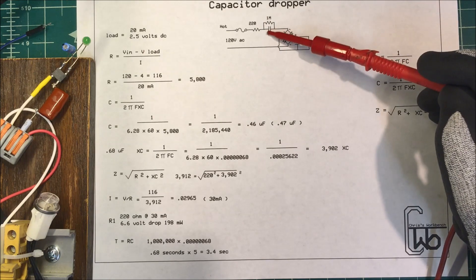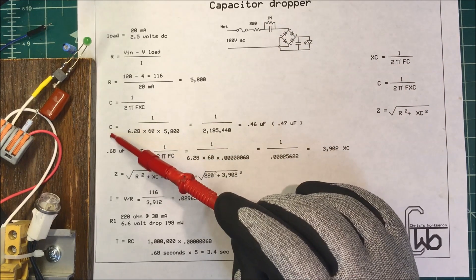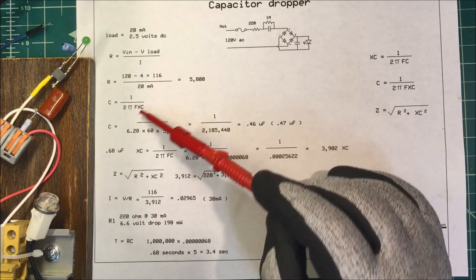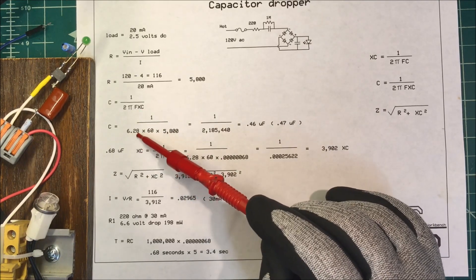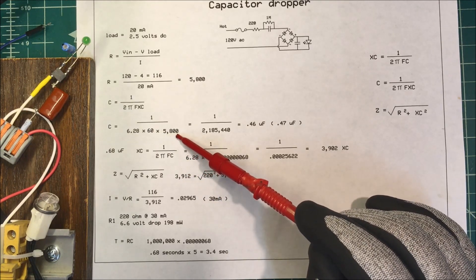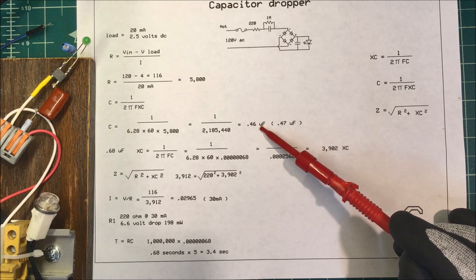To find the proper capacitor for that, to find the capacitance you take 1 over 2 pi times the frequency times the capacitive reactance. So I'm going to take 6.28 times 60 times 5,800 ohms and it comes out to 0.46 microfarads.